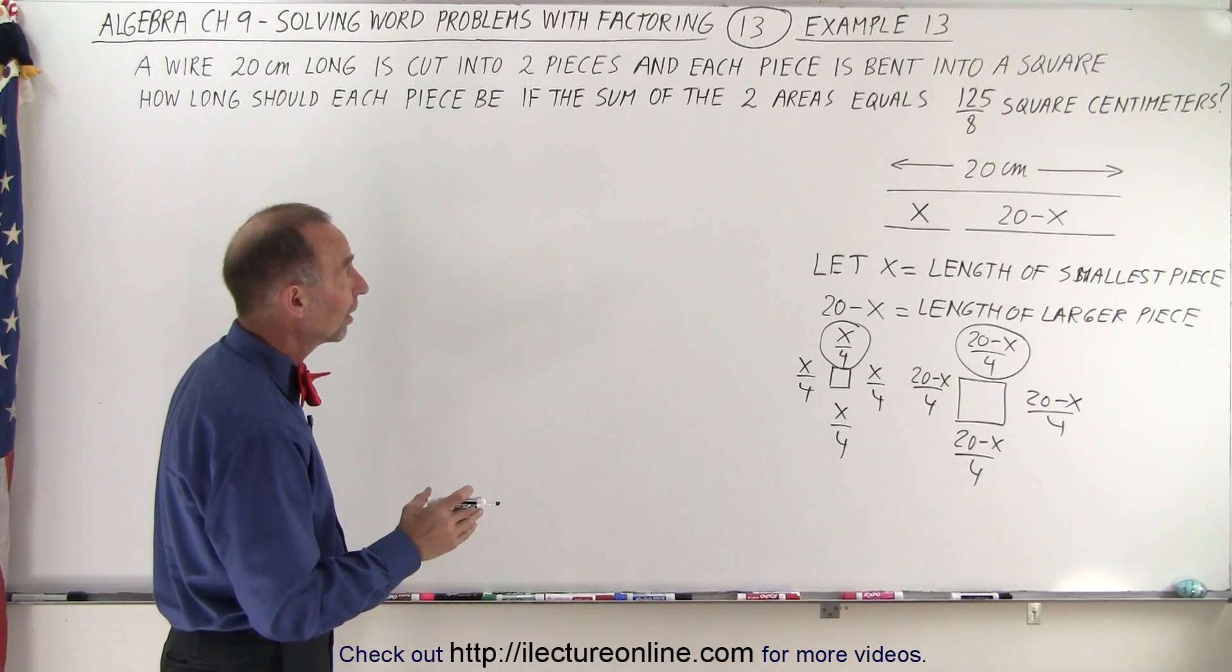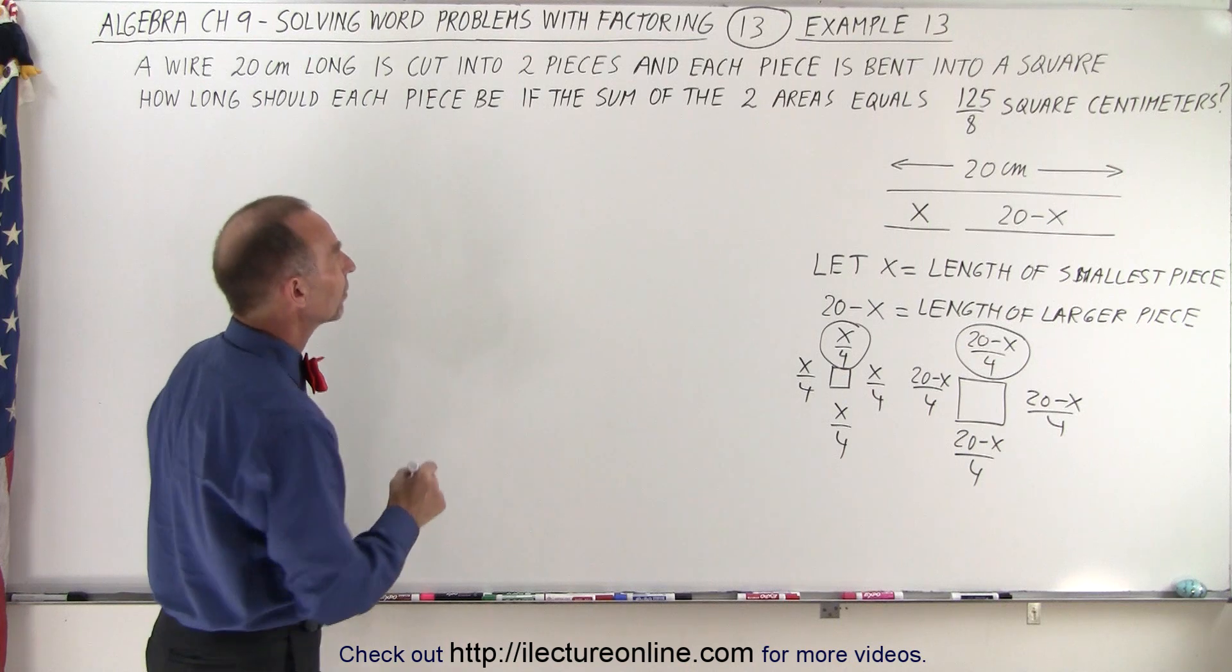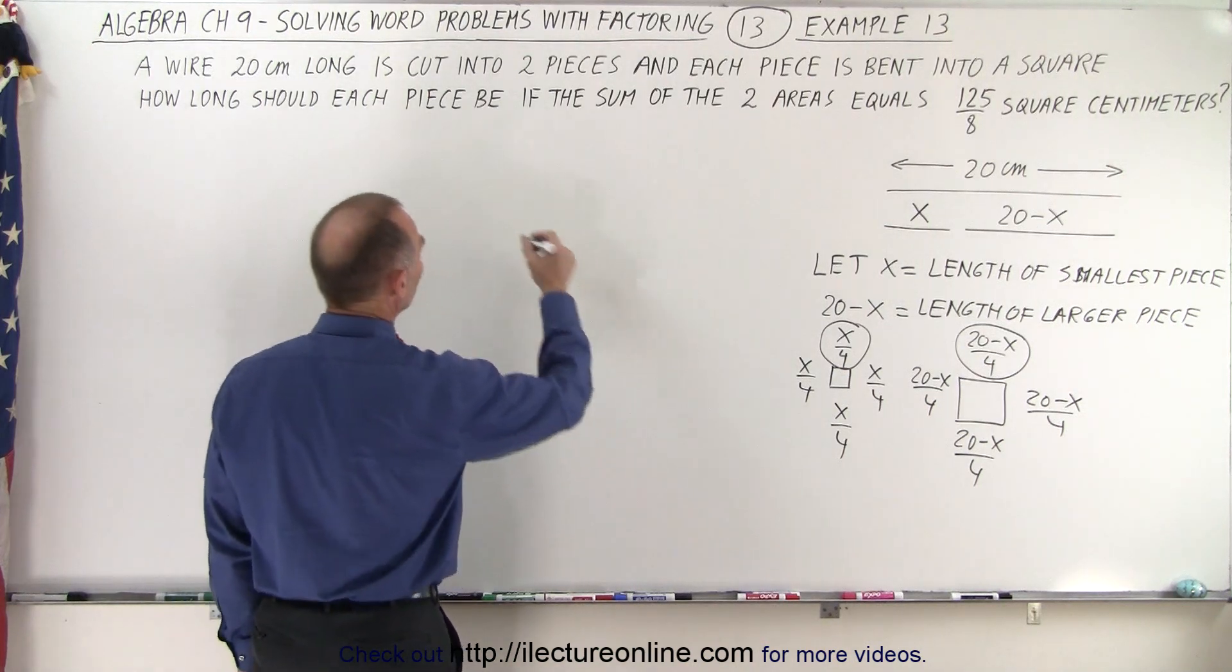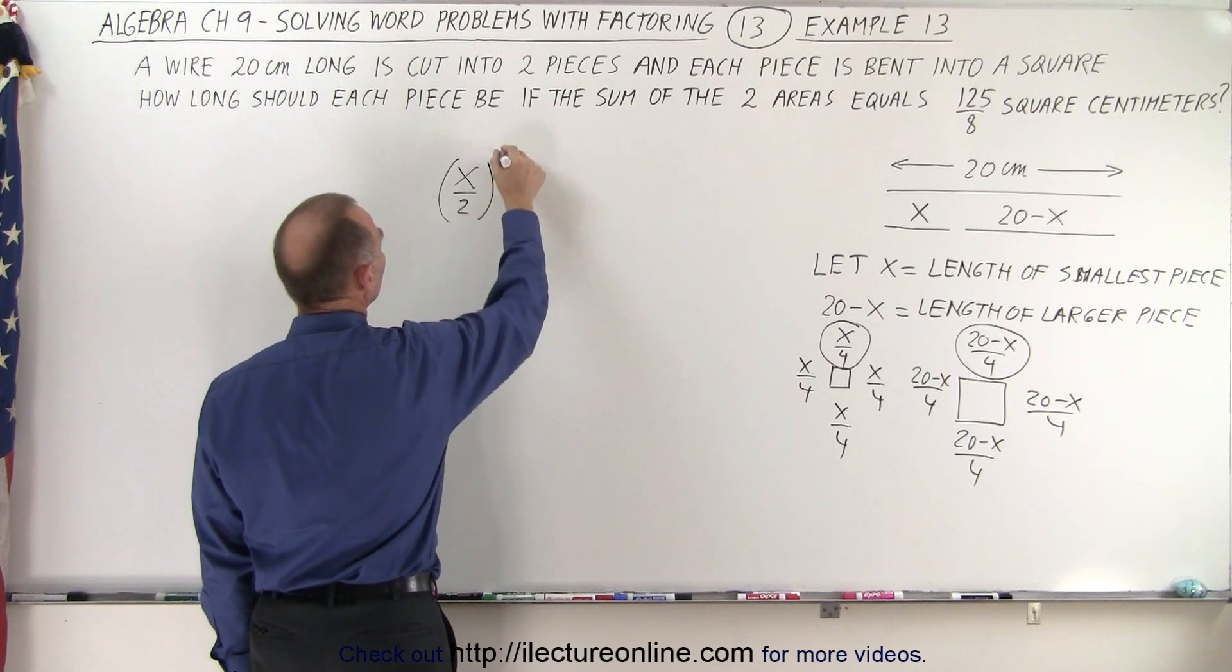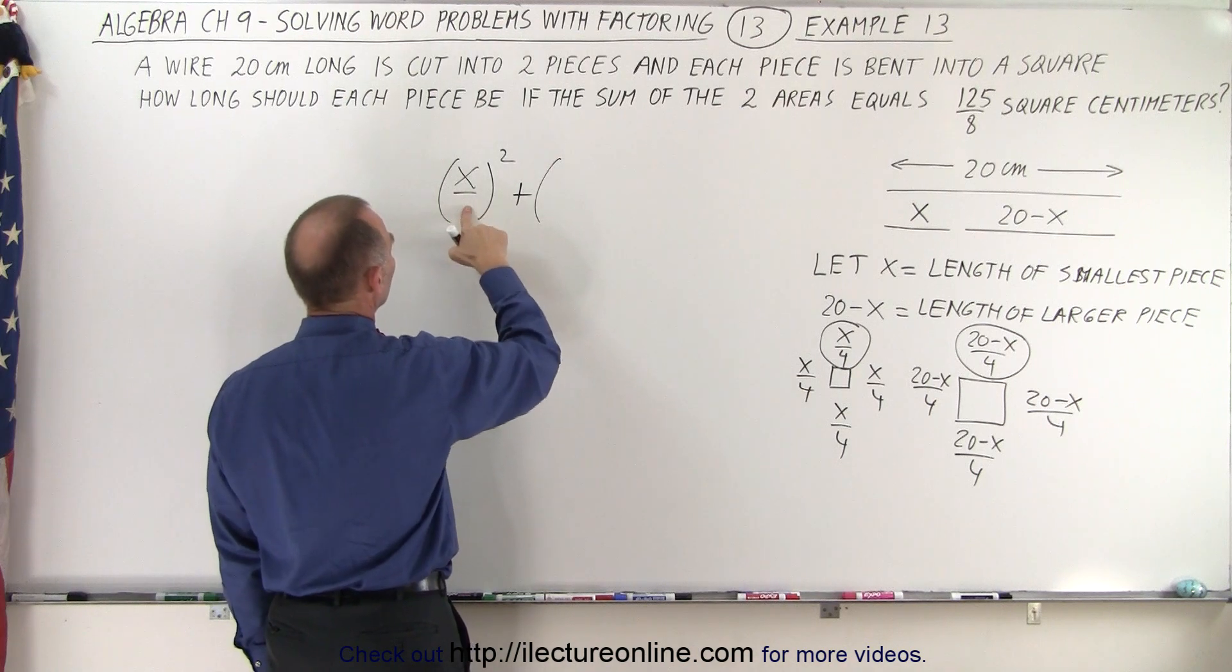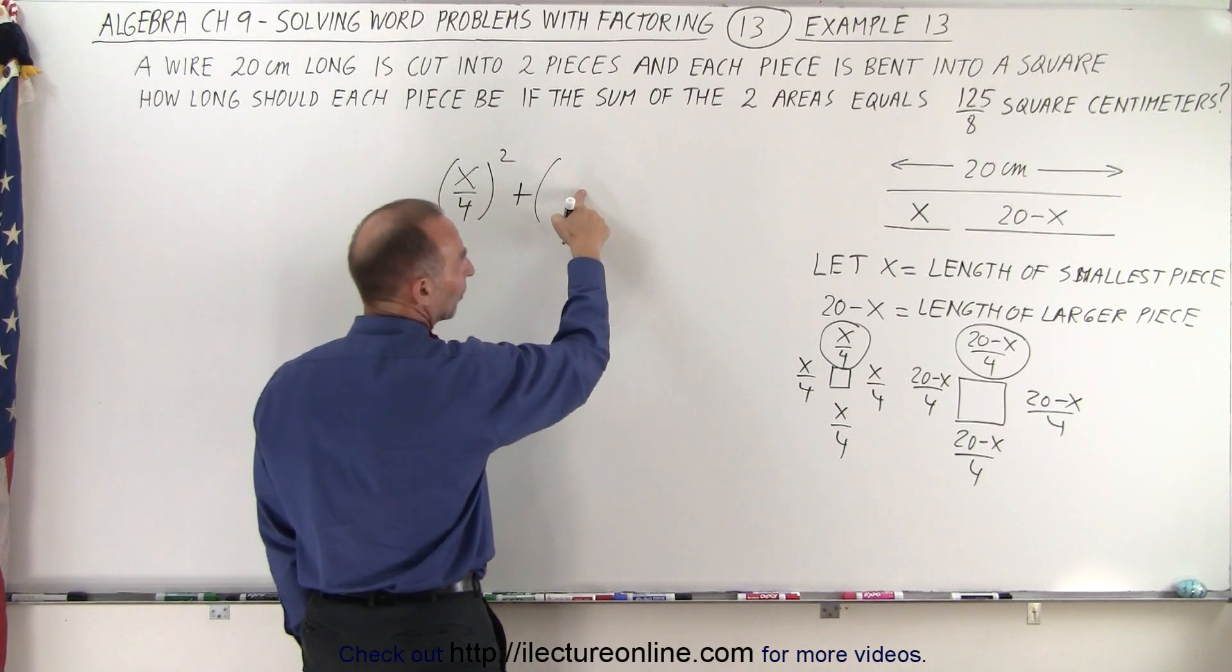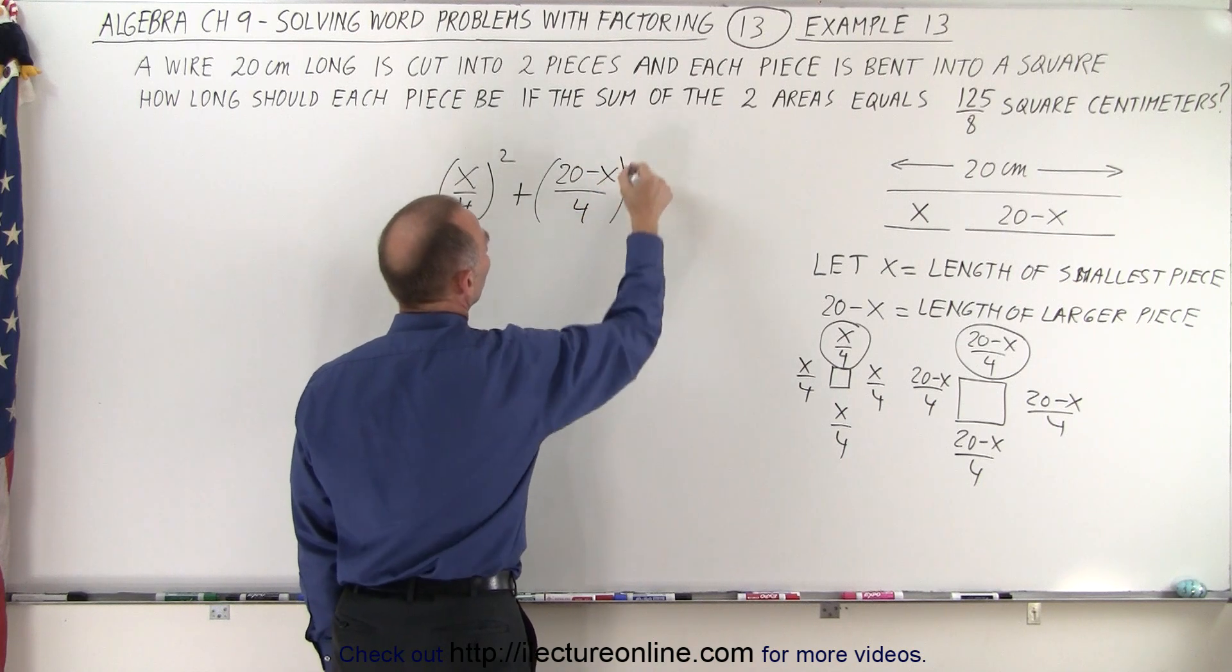And now they tell us that the sum of the areas equal 125 over 8. To find the area of a square would be the side squared, so x over 4 quantity squared. That would be the area of the small square, not over 2 but over 4 of course. And then the large one would be 20 minus x divided by 4, and we square that.